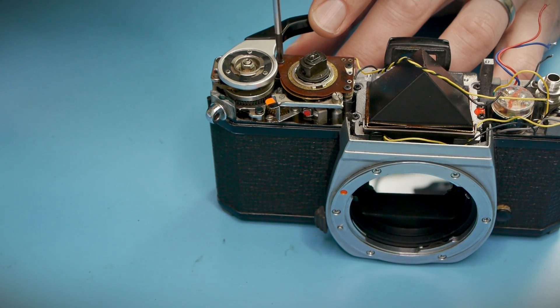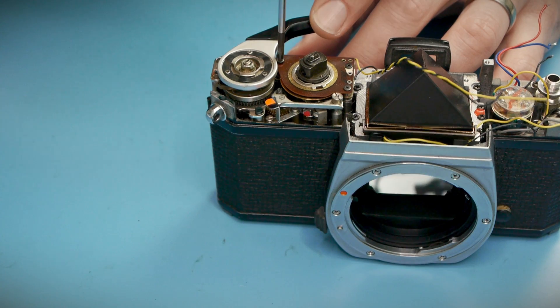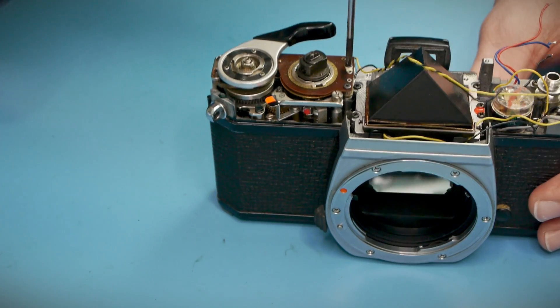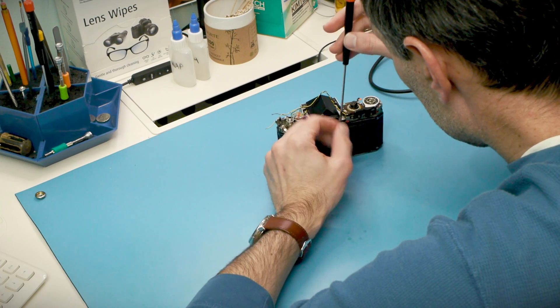I'm unscrewing the speed resistor now. It's not strictly necessary to remove this to get the mirror box out but I'll need to do it eventually to get at the shutter mechanism underneath and this will get a couple more annoying wires out of the way.